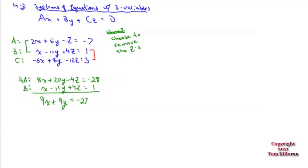That's interesting — 9x, 9y, negative 27 all have 9 in common. Divide everybody by 9 and you get a nicer equation: x plus y equals negative 3. This doesn't solve it, but it gets rid of one variable — now we're down to two variables instead of three. That's called a reduction.